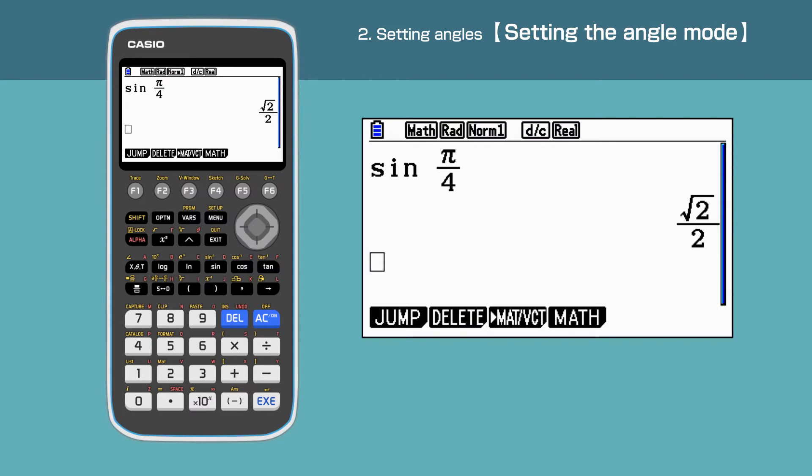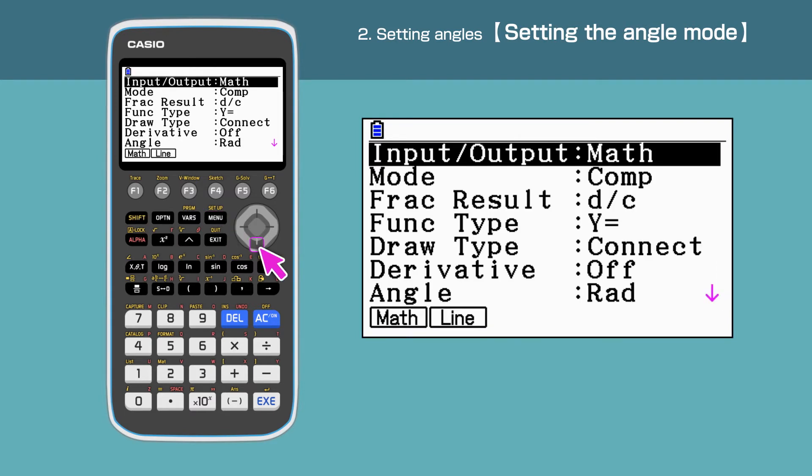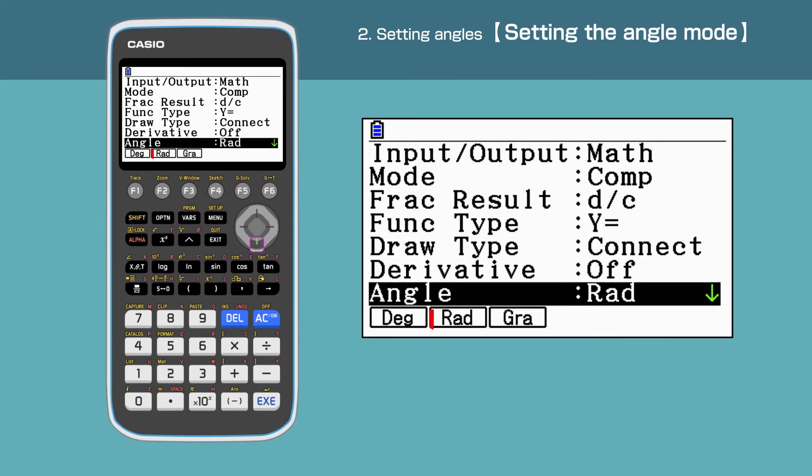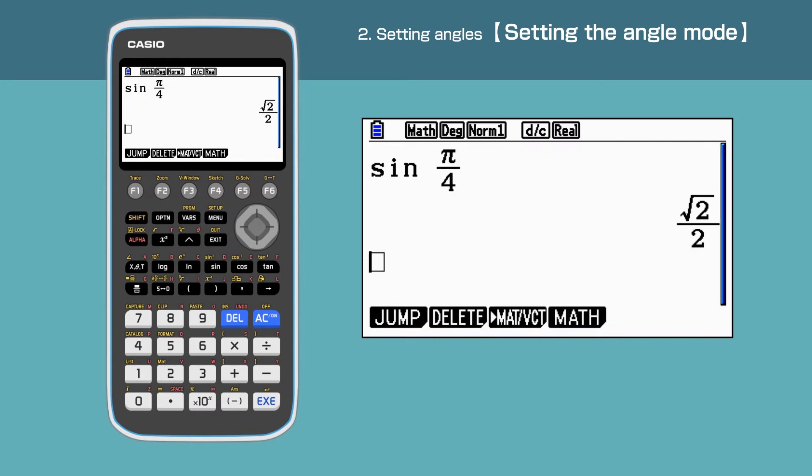go to Setup by pressing Shift followed by Menu. Scroll down to highlight Angle. Press F1 to change Radians to degrees. Press Exit to finish the setting.